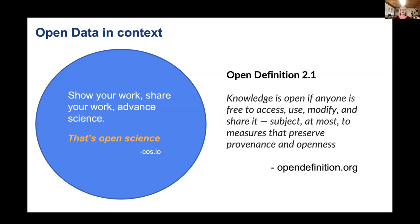In the open definition at the Open Knowledge Foundation, we see that knowledge is open if anyone is free to access, use, modify and share it, subject at most to measures that preserve provenance and openness. This promotes a robust commons in which anyone may participate and interoperability is maximized. Emphasis on use and reuse helps ensure quality and encourages compatibility between different pools of open material.